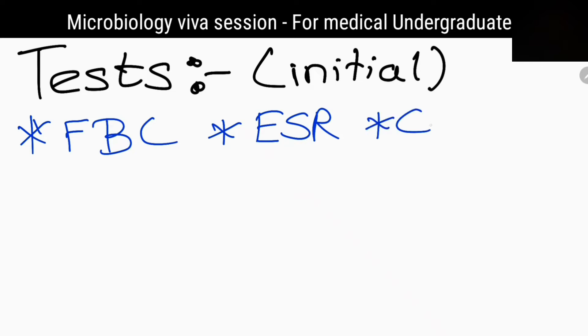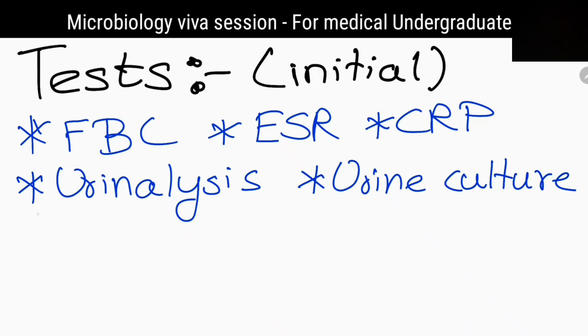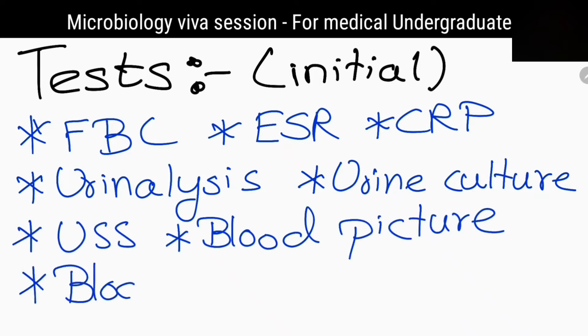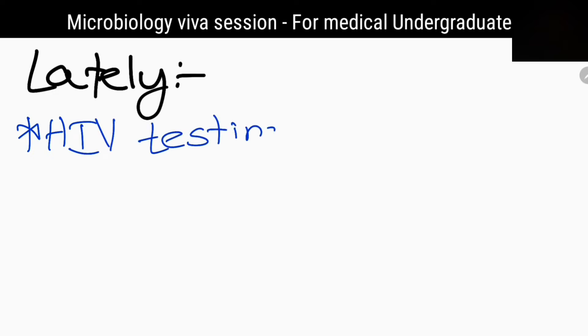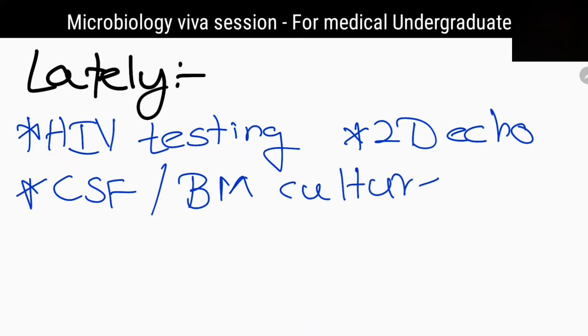What are the tests you would like to perform initially? I would like to do full blood count, ESR, C-reactive protein, urine analysis, urine culture, ultrasound scan, blood picture, and blood culture. Later I would like to do HIV testing, echocardiography, cerebrospinal fluid analysis, bone marrow culture, CT scan, and MRI scan.